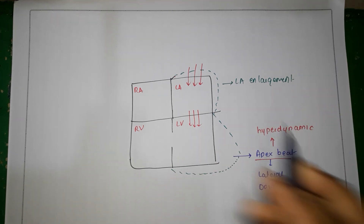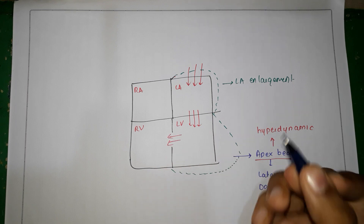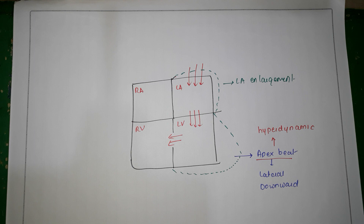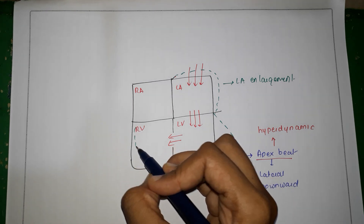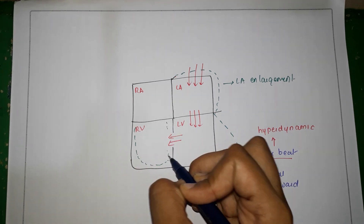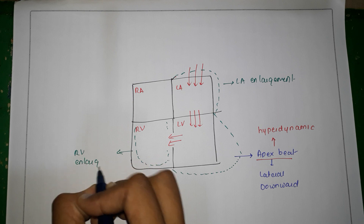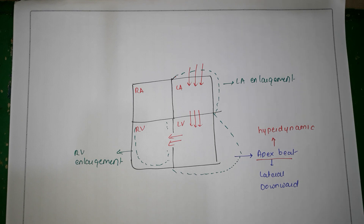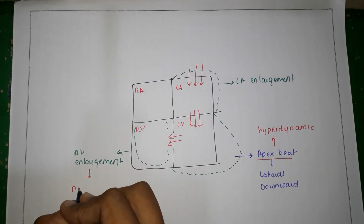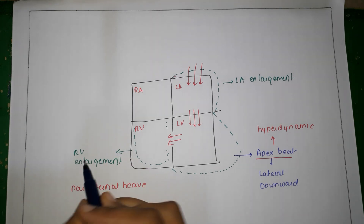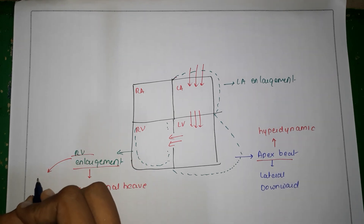Over time, as the VSD persists, because of increased pulmonary blood flow the lungs compensate by developing either obstructive or hyperkinetic pulmonary hypertension. Once pulmonary hypertension sets in, the right ventricle hypertrophies to compensate, causing RV enlargement. This RV enlargement can be seen as a parasternal heave, and due to RV enlargement you may also feel epigastric pulsations.